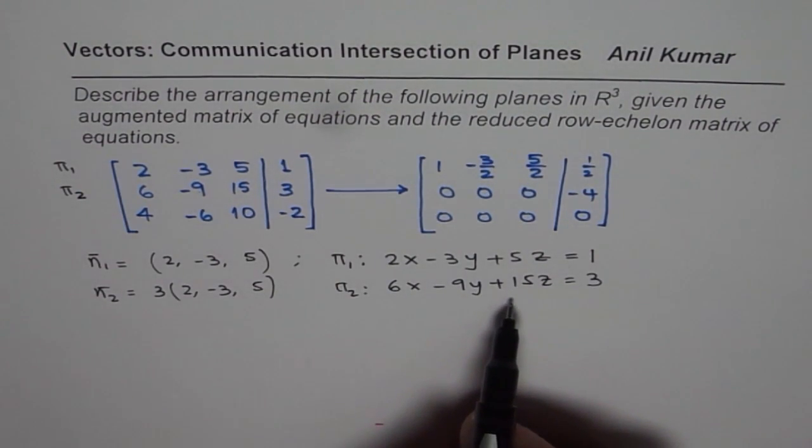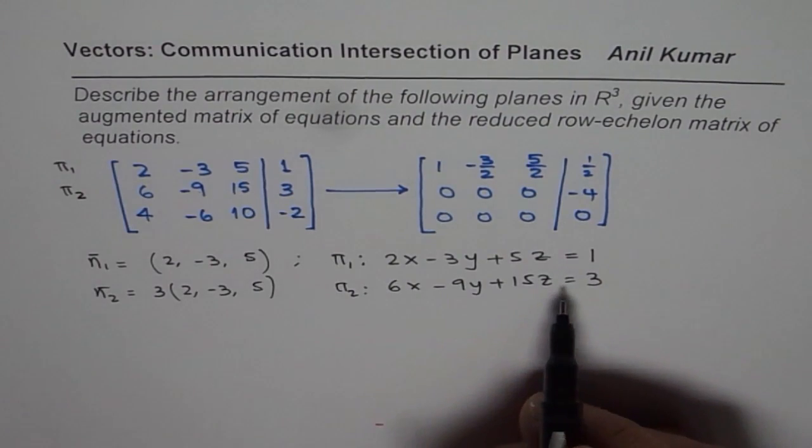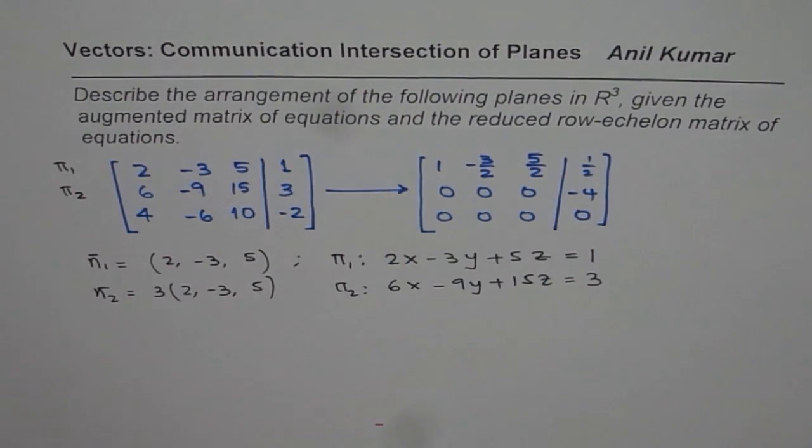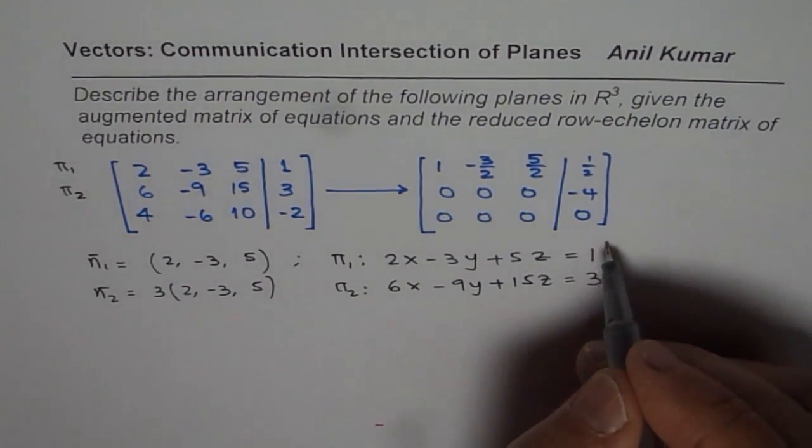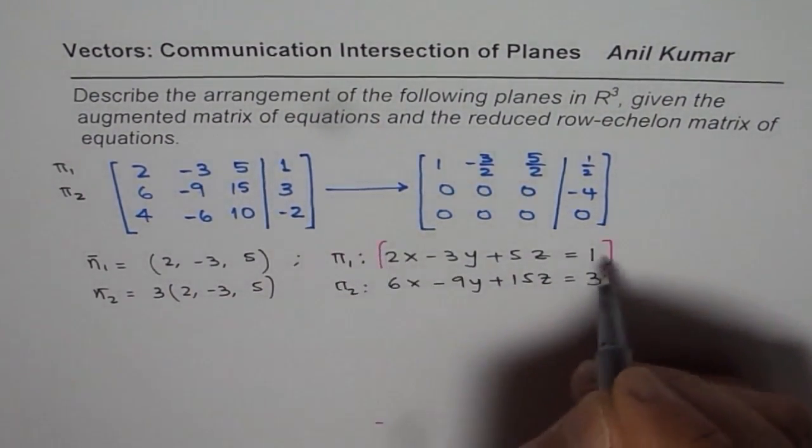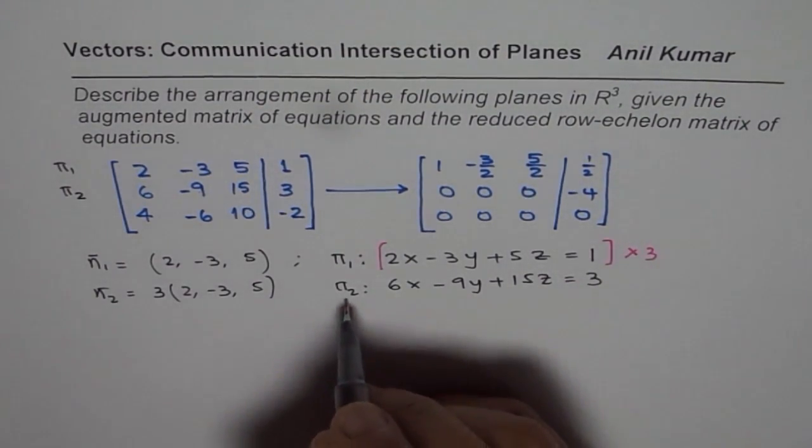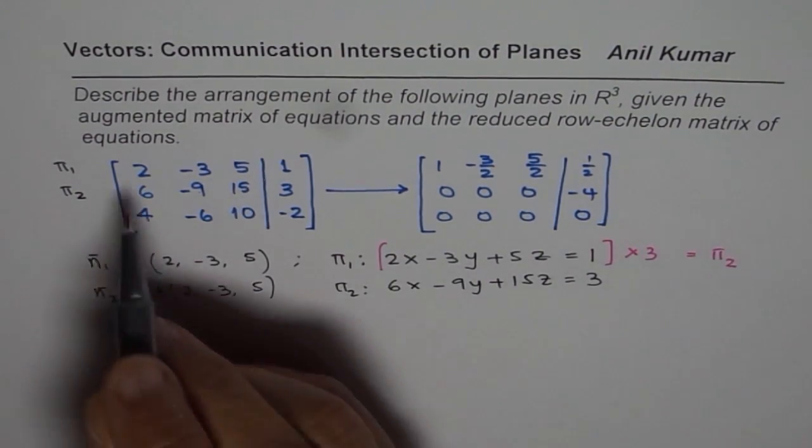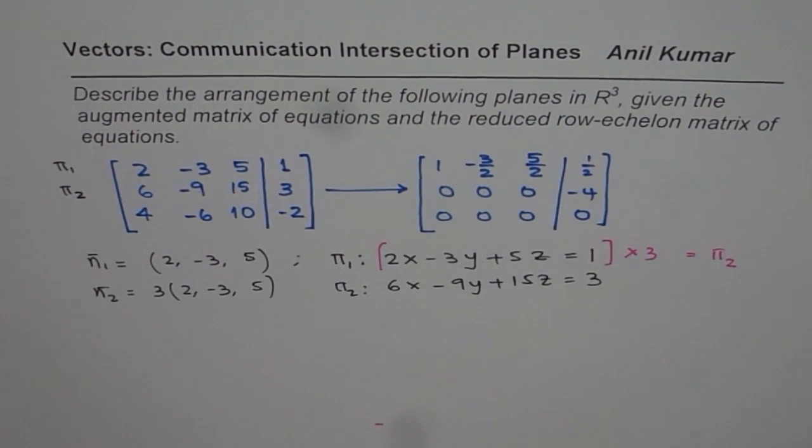And from here you could clearly see that these are overlapping planes. So if I multiply the first equation by 3 the whole equation times 3 we get π2. So times 3 this is equal to π2. So that means these two planes are coincident.